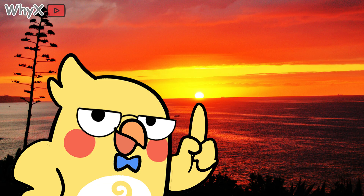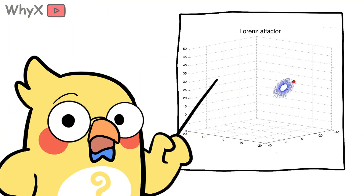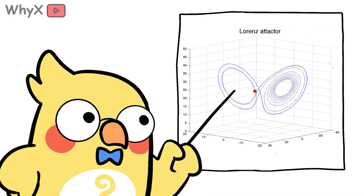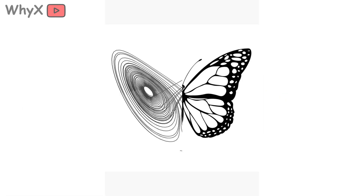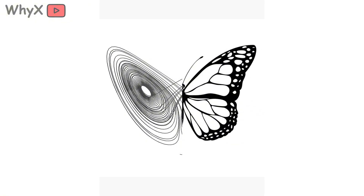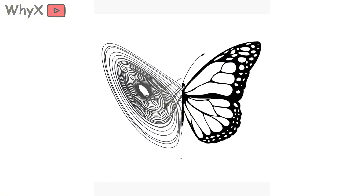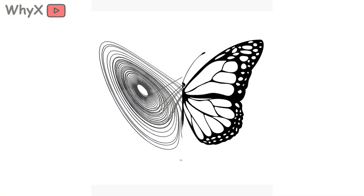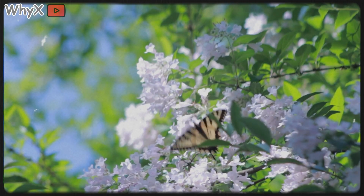And here's where it gets beautiful. Lorenz discovered something called the Lorenz Attractor — a strange butterfly-shaped structure in phase space, the mathematical map of a system's possible states. If you plot the evolution of Lorenz's equations, the trajectory loops endlessly in two swirling wings, never repeating but never escaping. It's bounded unpredictability — a pattern hidden inside chaos. And yes, it literally looks like a butterfly. Nature has a sense of humor.